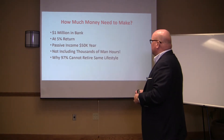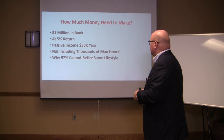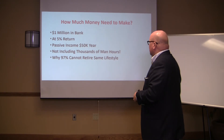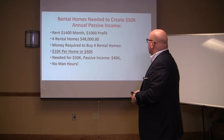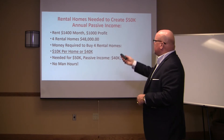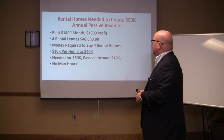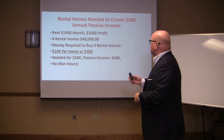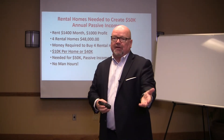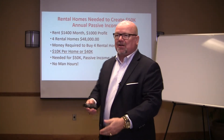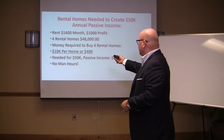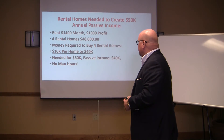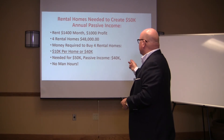Now compare that to real estate: one million in a bank at 5% gives you $50,000 passive income. With rental homes at $1,400 a month and a $1,000 profit per home, four rental homes give you $48,000. The money required to buy four rental homes — the more knowledge you have, the less money it takes — roughly $10,000 per home, or $40,000 total.